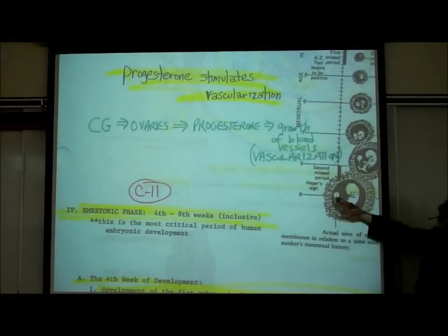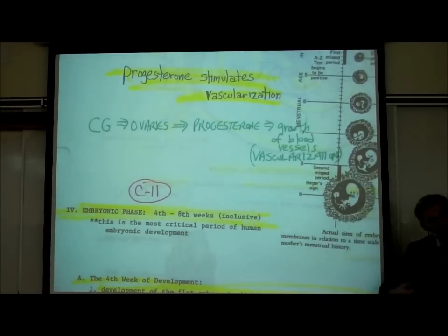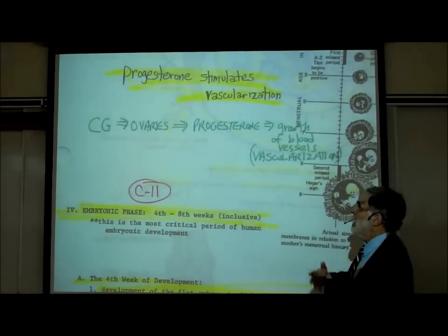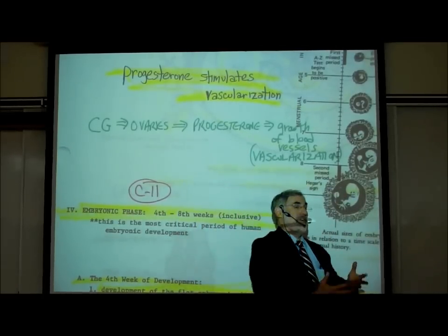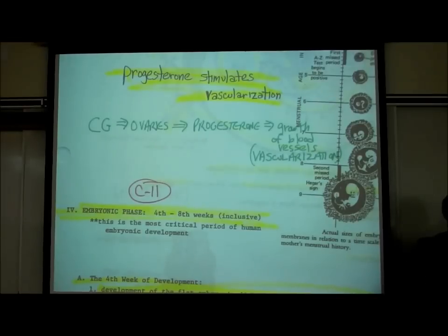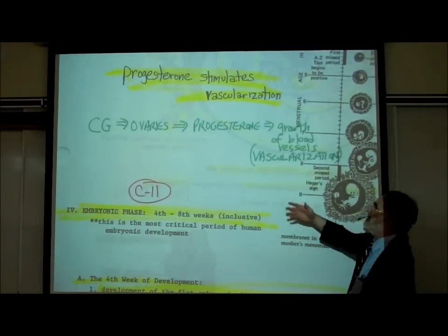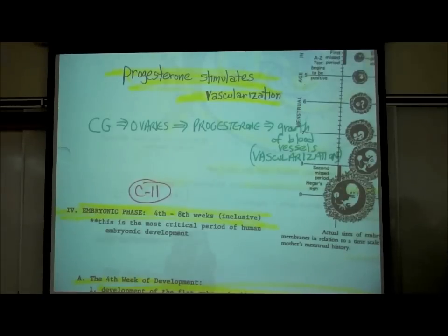What does progesterone do? Progesterone is a hormone produced by the ovaries that causes growth of blood vessels, ensuring they continue to nourish the baby for the duration of the pregnancy. If there wasn't progesterone, the blood vessels would be shed — and when blood vessels in the endometrium are shed, that's called having a period. So if a woman menstruates and sheds those blood vessels, she loses the pregnancy. This is what ensures the pregnancy will be maintained — the ovaries of the mother are literally being controlled by a hormone produced by the baby.